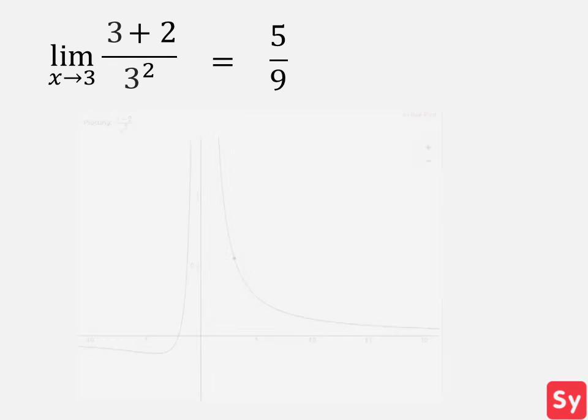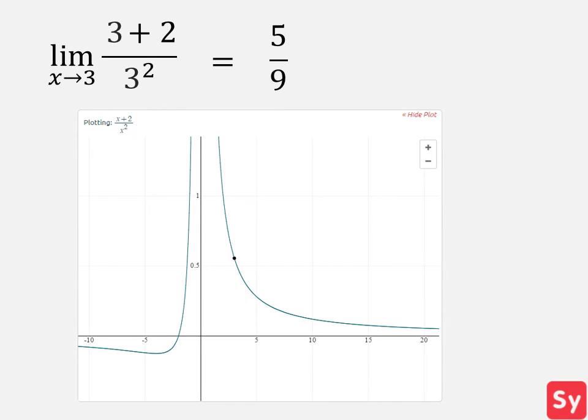Let's see a graph to reconfirm our answer. We can see that the left side of the limit and the right side of the limit approach 5 ninths. Therefore, 5 ninths is our answer.